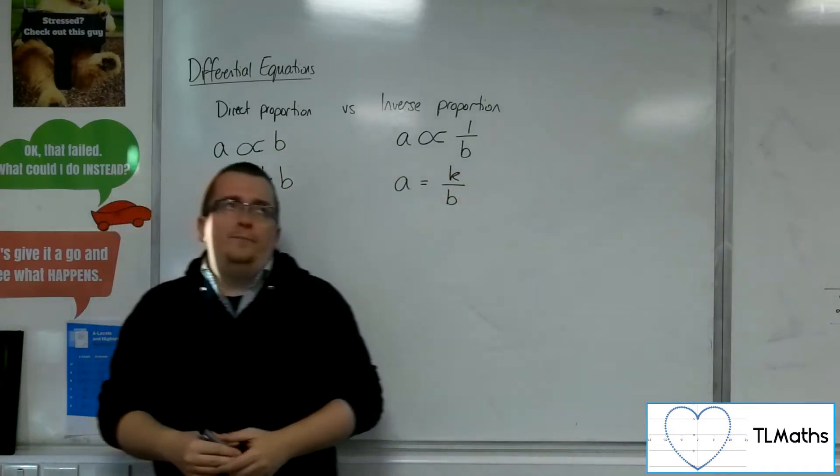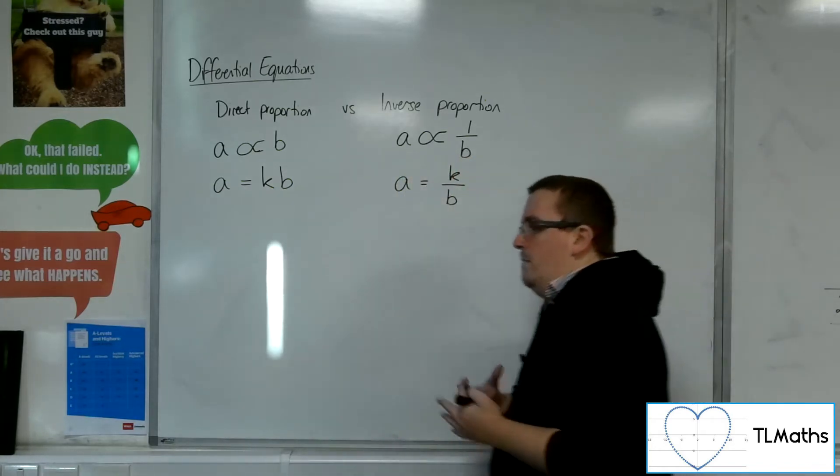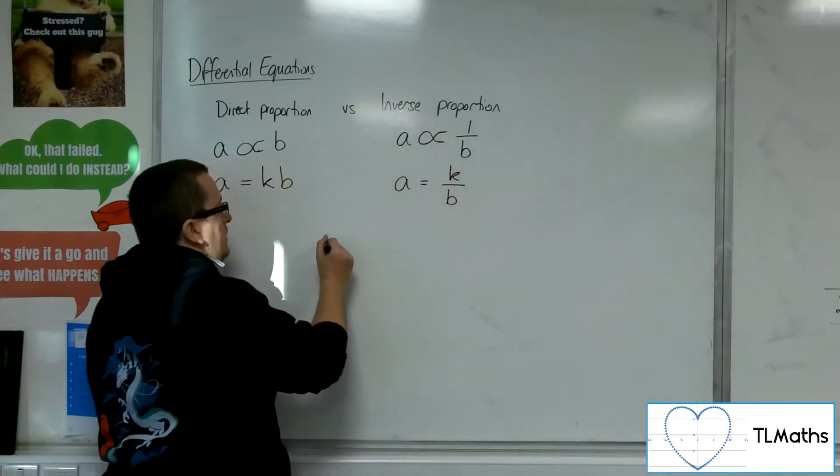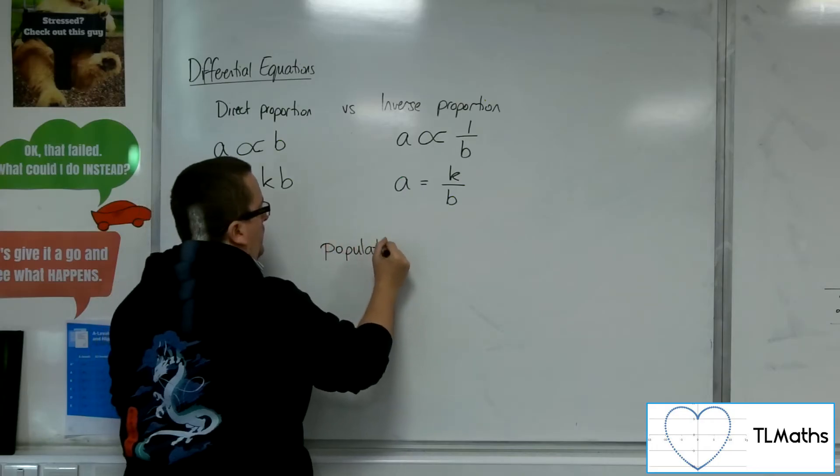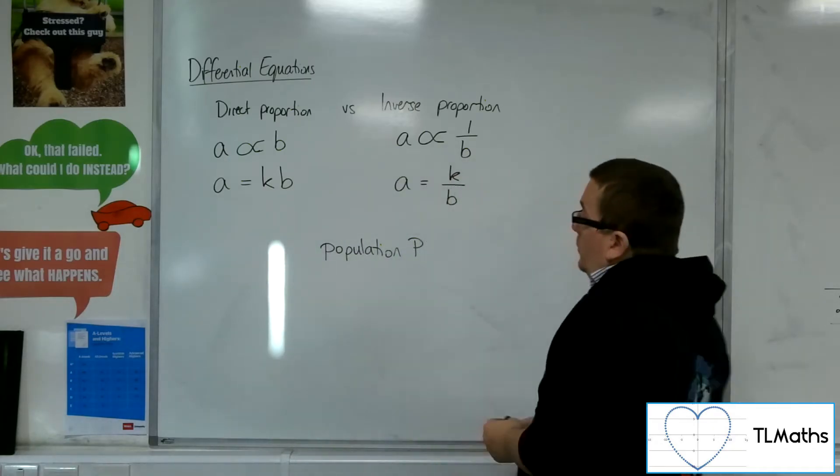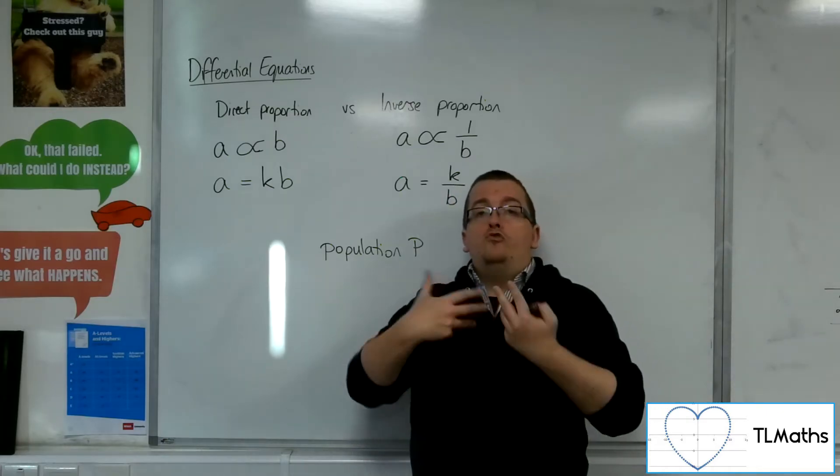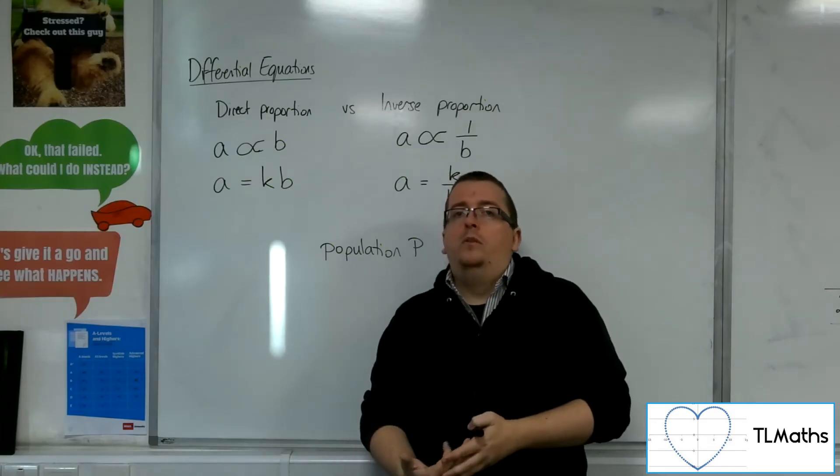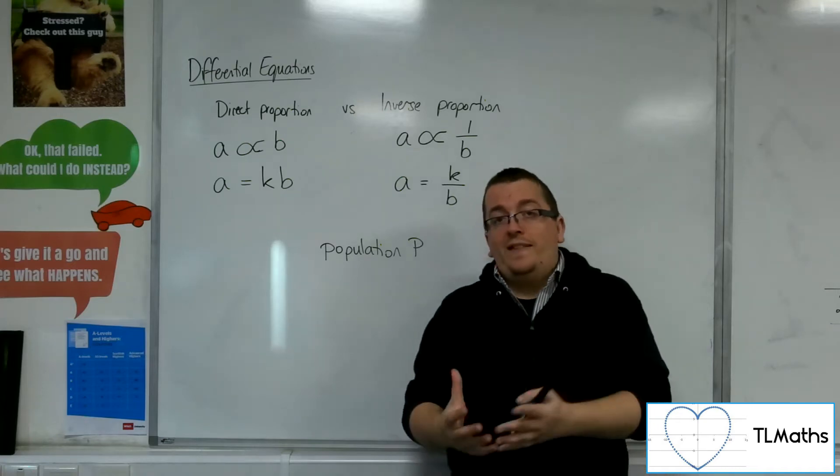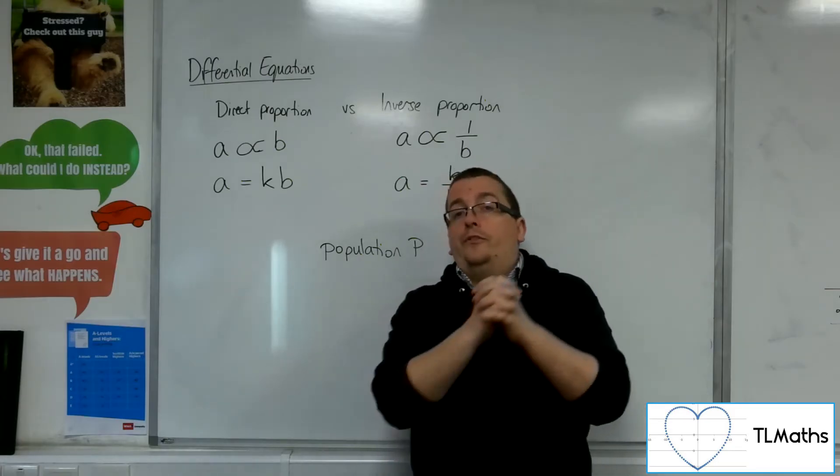So if we think of how a differential equation might come into this, then we might say, let's say that there is a population P. It could be a population of rats, for example, or some other animal. And the rate of their growth is proportional to the current size of the population. So let me say that again. The rate of growth of the population is proportional to the size of the population.